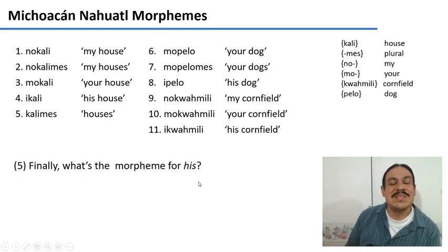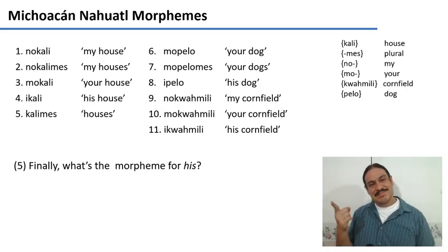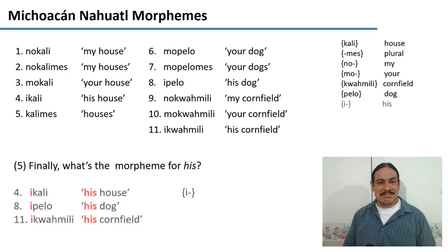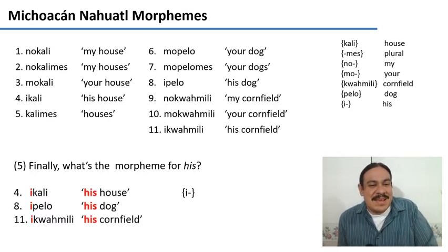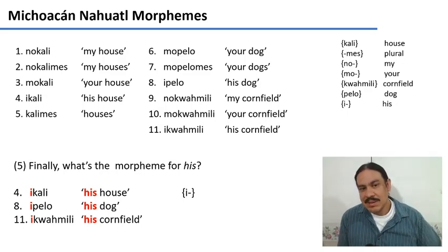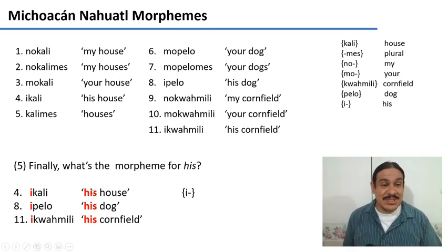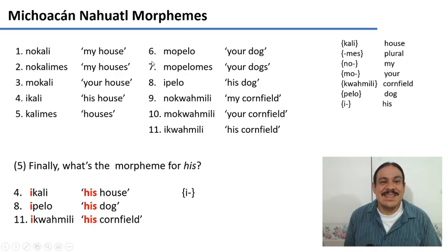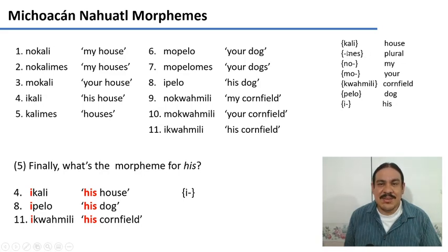What's the morpheme for 'his'? Please pause the video. We have examples like number four, 'ikali'; number eight, 'ipelo'; and number eleven, 'iquachmili.' The only thing they have in common in English is 'his,' and the only thing they have in common in Nahuatl is the prefix 'i.' So 'i' means 'his.' These are the morphemes contained in this data set, and they help us explain the structure of Nahuatl words. Possession is indicated with a prefix; plurality is indicated with a suffix.